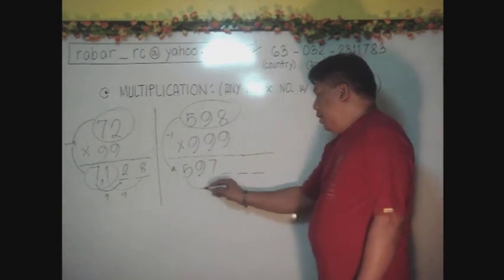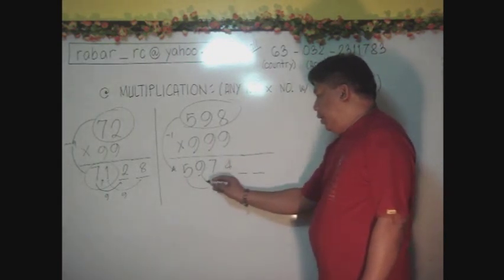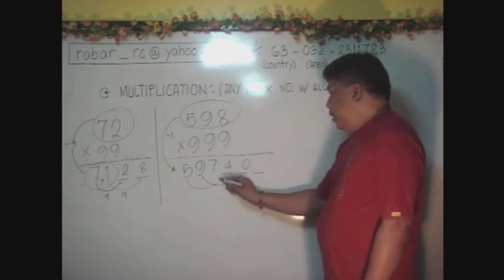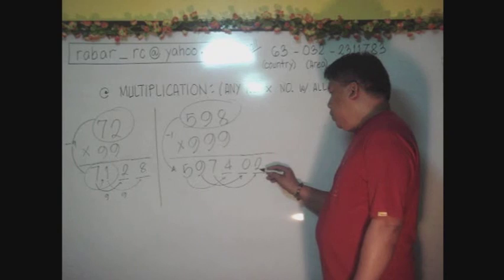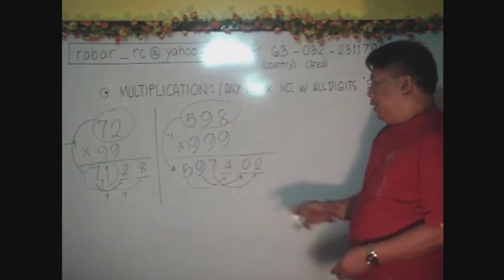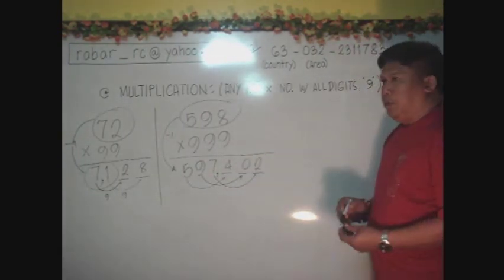To make this one 9, we lack here 4. To make this one 9, and that is 9 already, we have a 0. And then 7, to make it 9, we have 2. And that completes our answer for this multiplication. The answer is 597,402.